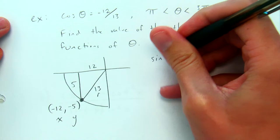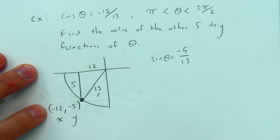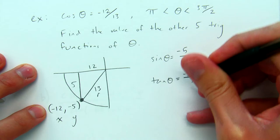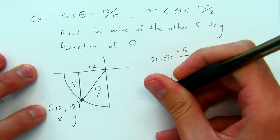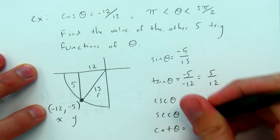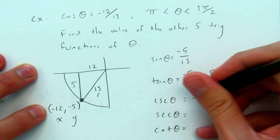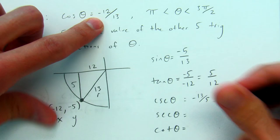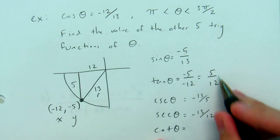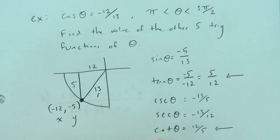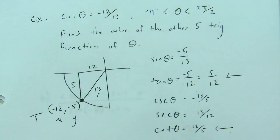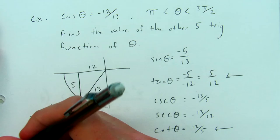Using x, y, and r, I can find sine θ = y/r = −5/13. Tangent θ = y/x = −5/−12 = 5/12. Then cosecant, secant, and cotangent are the reciprocals of sine, cosine, and tangent respectively: cosecant is −13/5, secant is −13/12, and cotangent is 12/5. Notice tangent and its reciprocal are positive — that makes sense because in the third quadrant only tangent and cotangent are positive. Everything else should be negative.